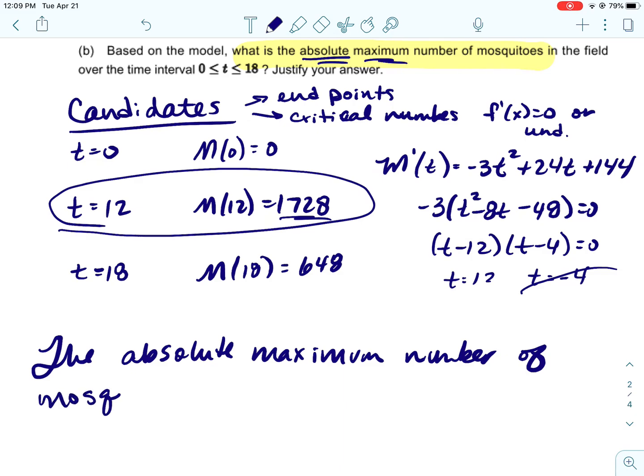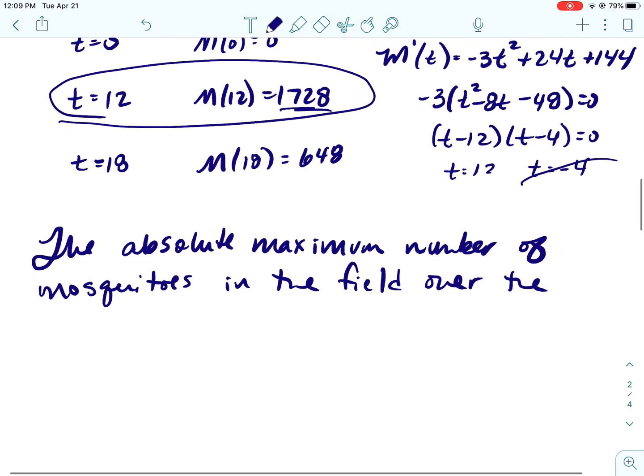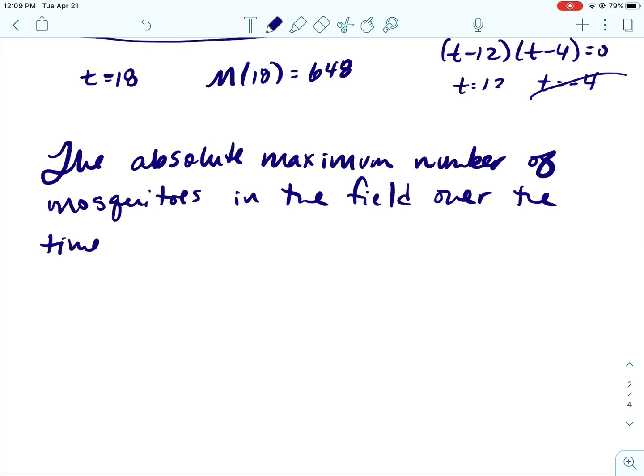Okay, so we would say the absolute maximum number of mosquitoes in the field over the time interval from 0 to 18 is, this is how they gave it. I feel like they would also accept just 1,728 mosquitoes.